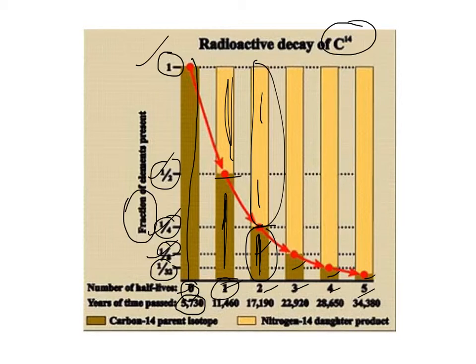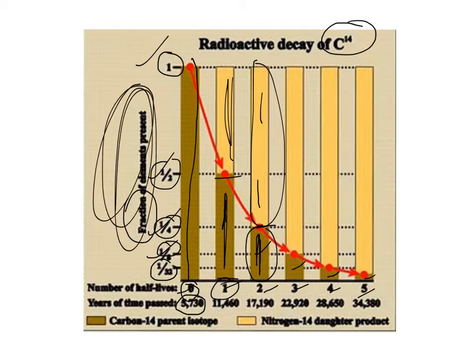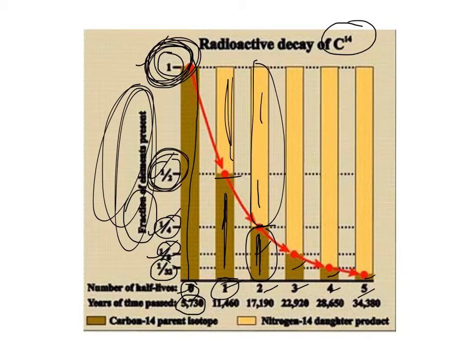That is essentially a radioactive decay curve. Just be aware that on the y-axis, it could be in fraction format, percent format, or it also could be in grams format. For example, if it said 200 grams at the start, then after one half-life there would be 100 grams, and after another half-life there would be 50 grams. That's all there is to a radioactive decay curve.